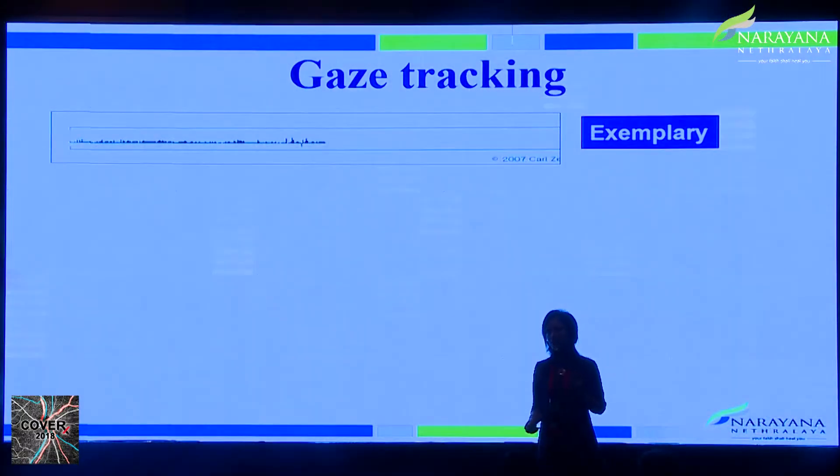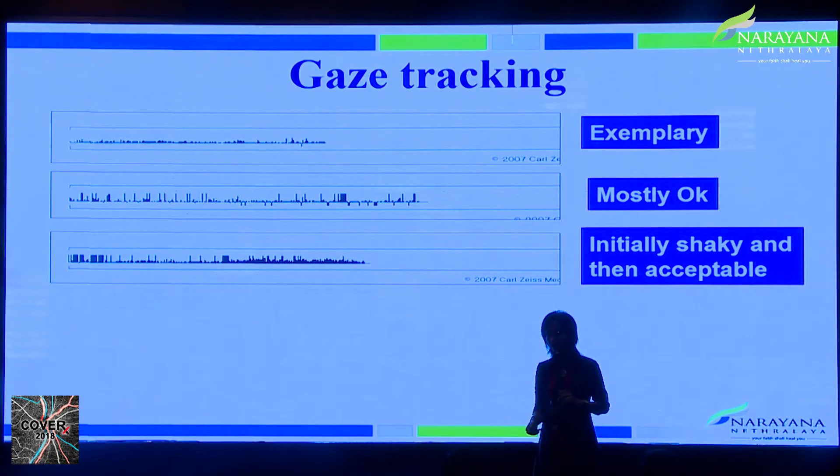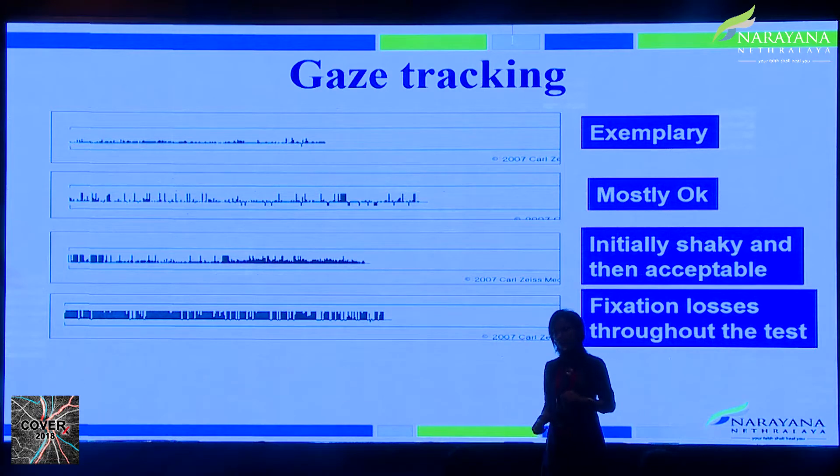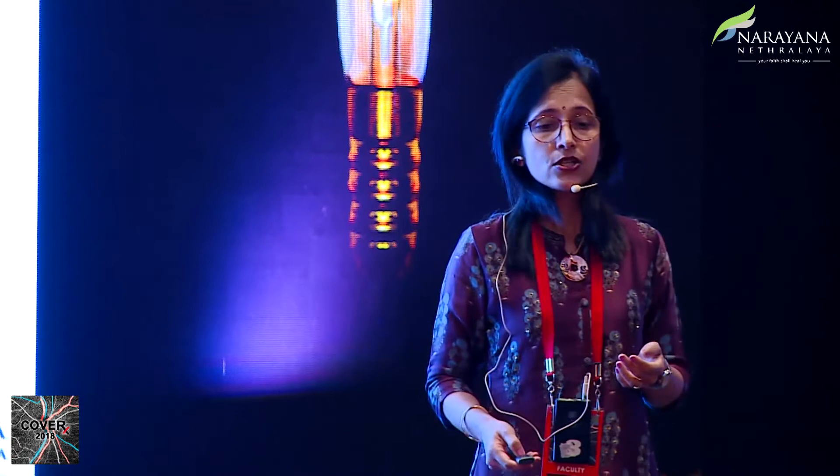The outcome is shown as the gaze track monitor at the bottom of the printout. An upward deflection means the patient moved their eye away from the fixation target; a small upward deflection is a small refixation movement. A downward deflection indicates a blink or eye closure. A flat gaze track means the patient did well. Fixation losses throughout the test — or downward deflections throughout — indicate an unacceptable and unreliable field, such as a patient sleeping during the test.